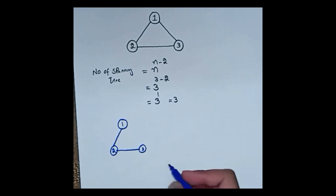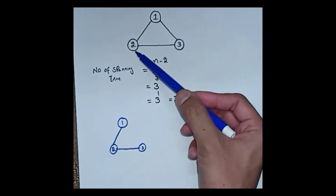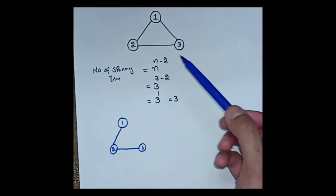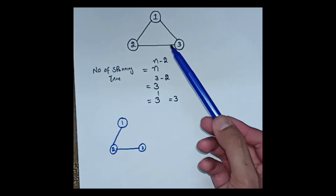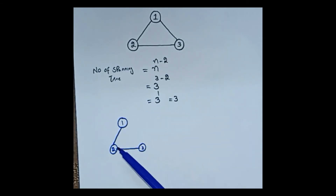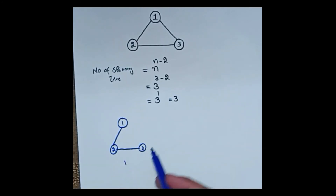How can I say that it is correct or not? The number of nodes are three, so the number of edges in the spanning tree should be three minus one, which is equal to two. Therefore it is a correct spanning tree.